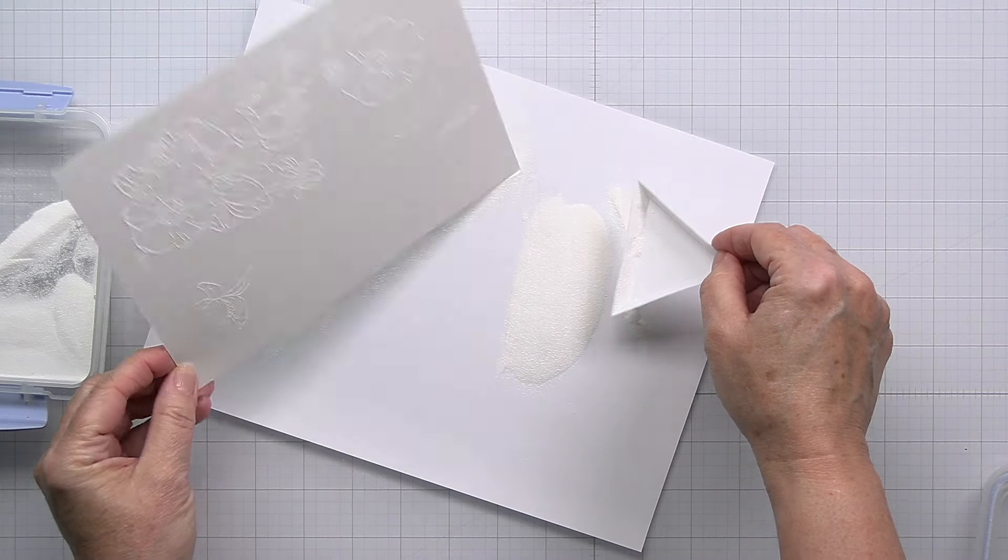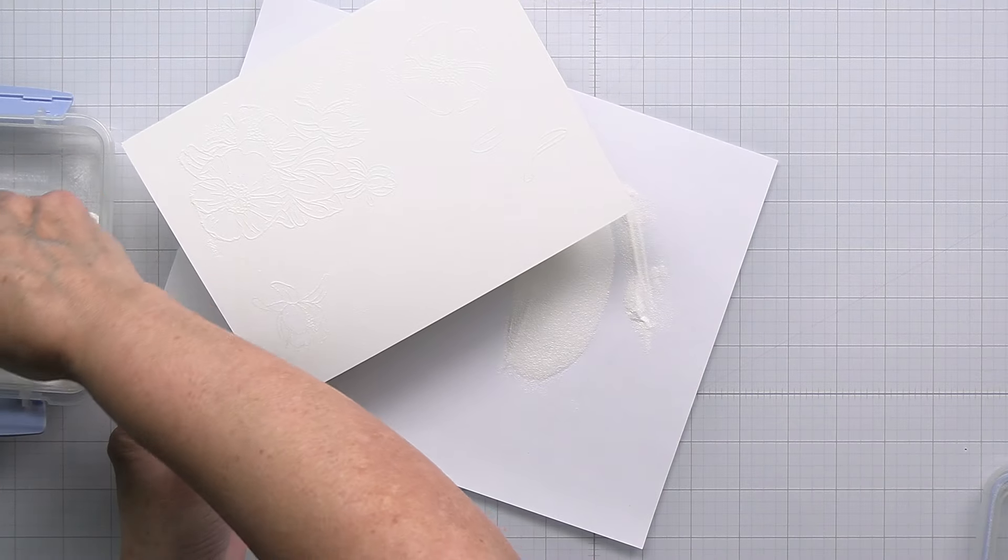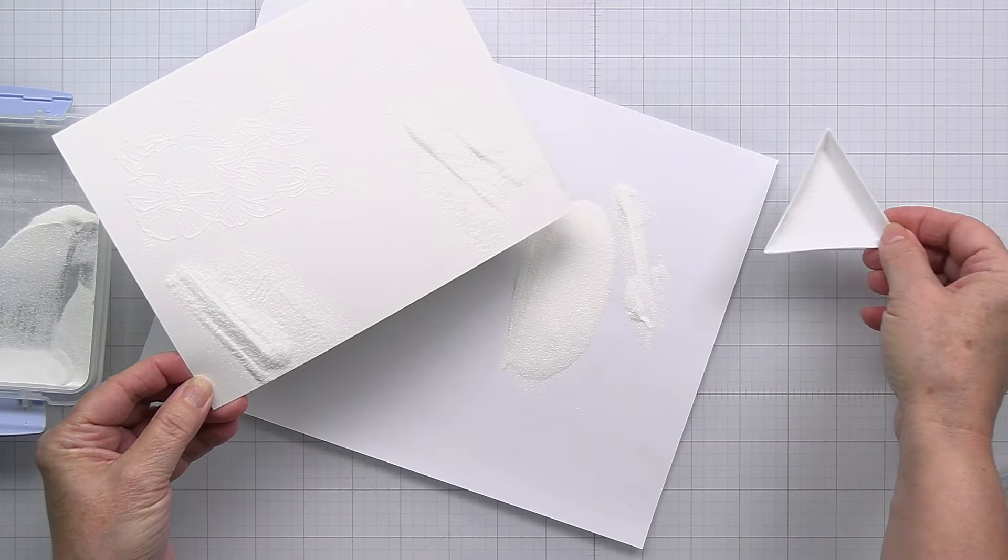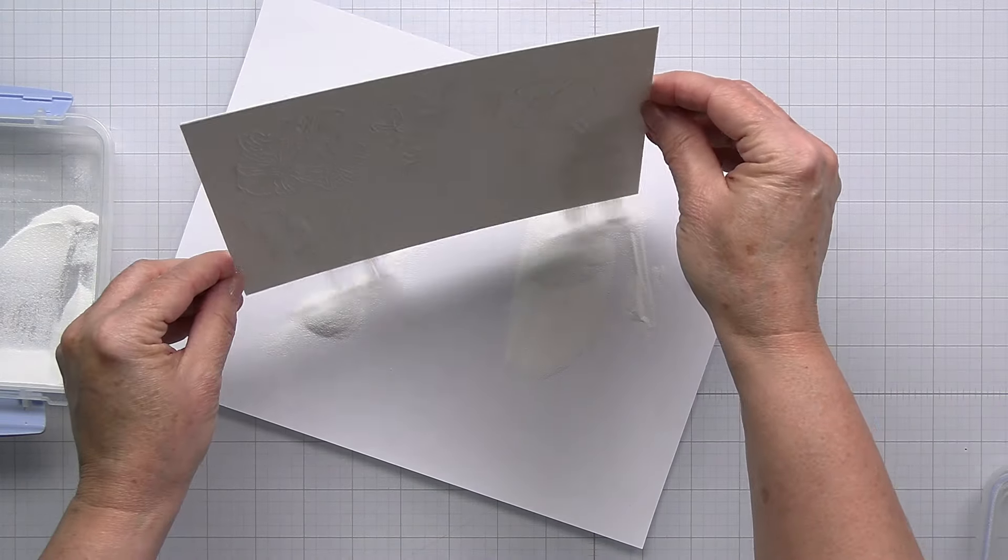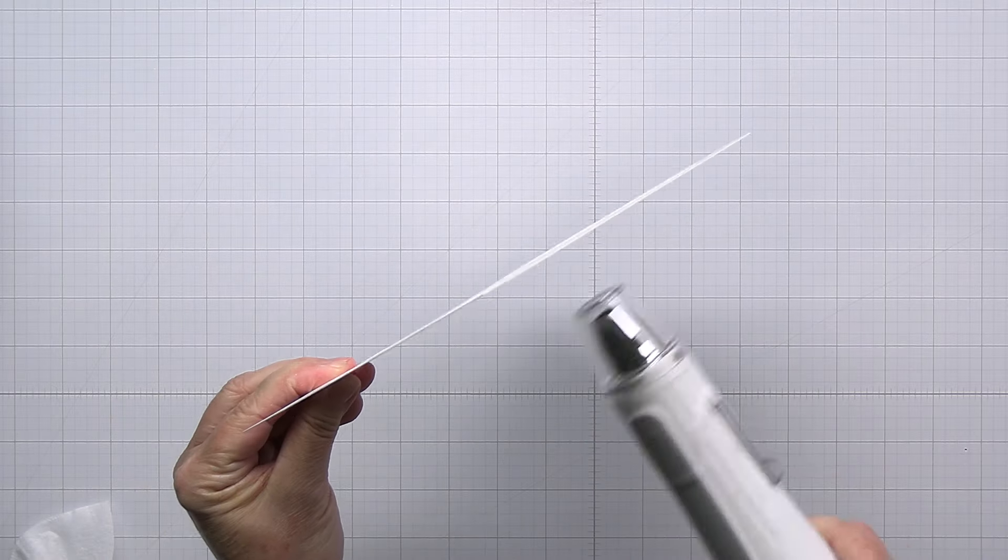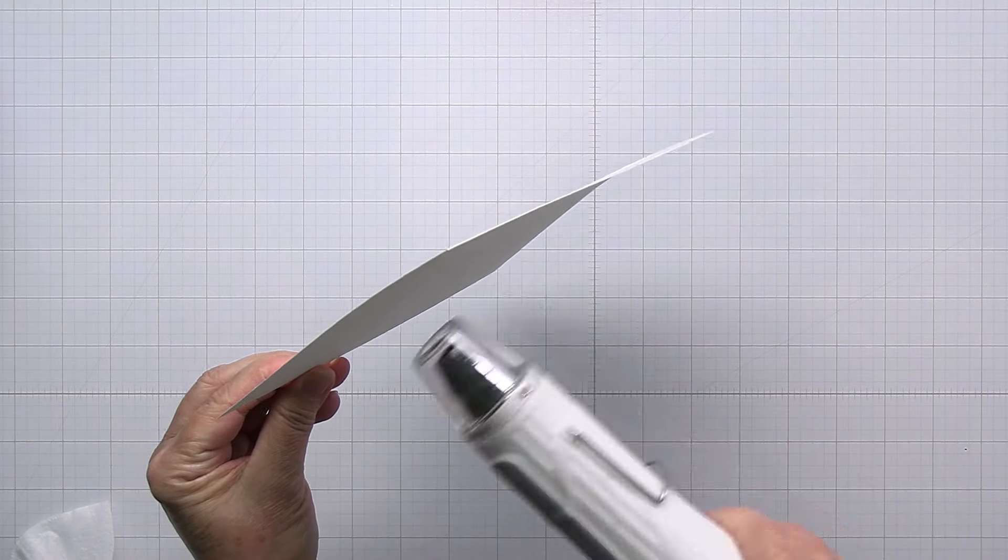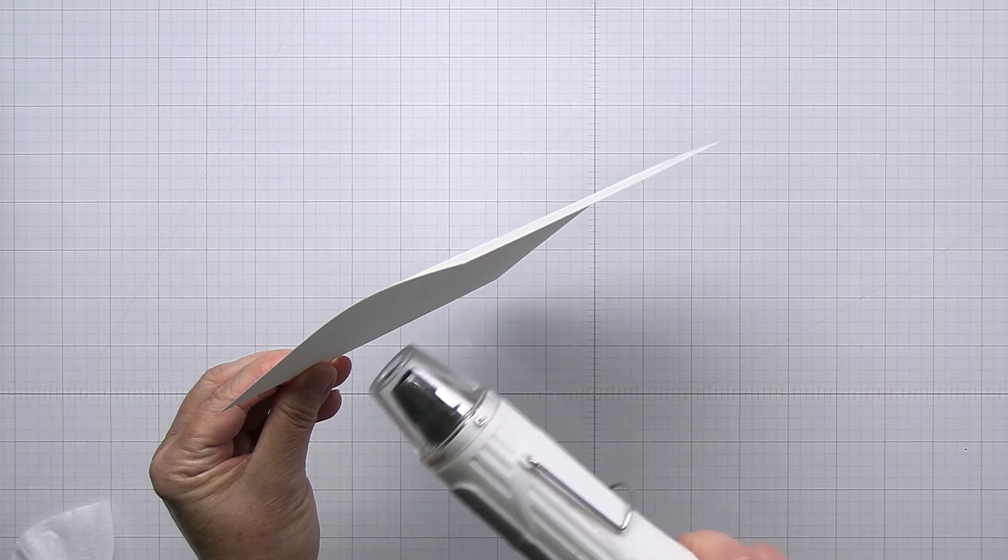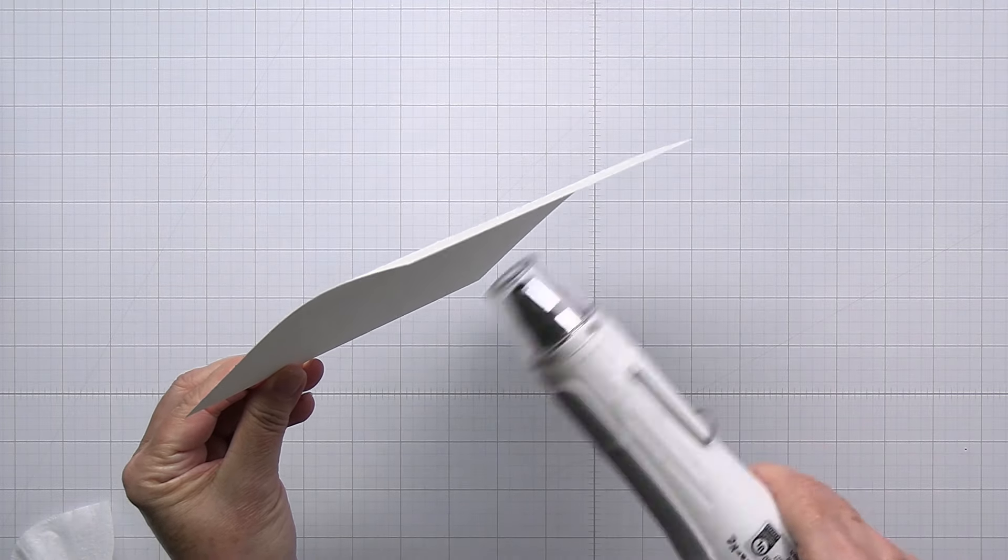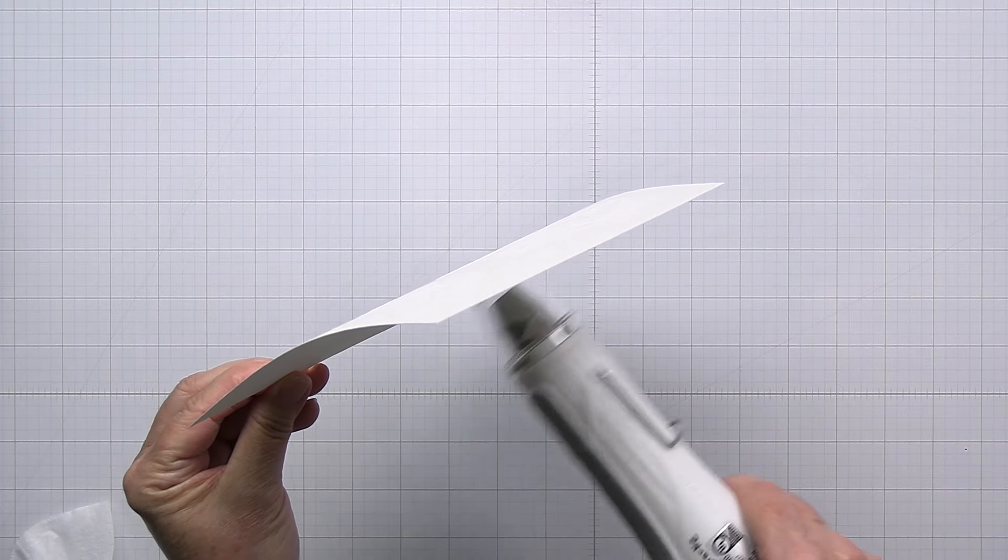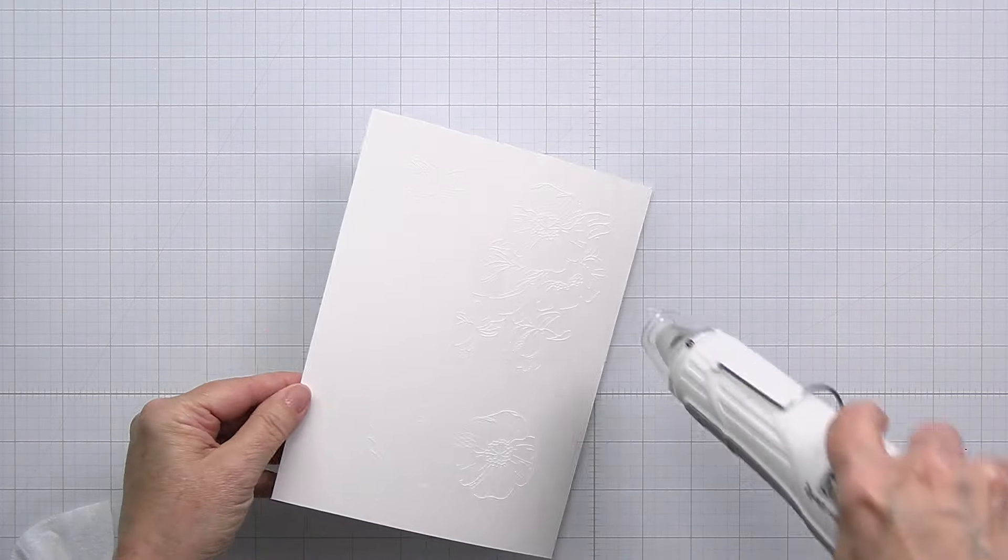That is going to allow me to do some heat embossing with these images. I'll just shake off the extra embossing powder and now I've got my heat tool here. I'm just going to heat up this embossing powder until it melts and that's going to give me this really great bunch of florals to watercolor.